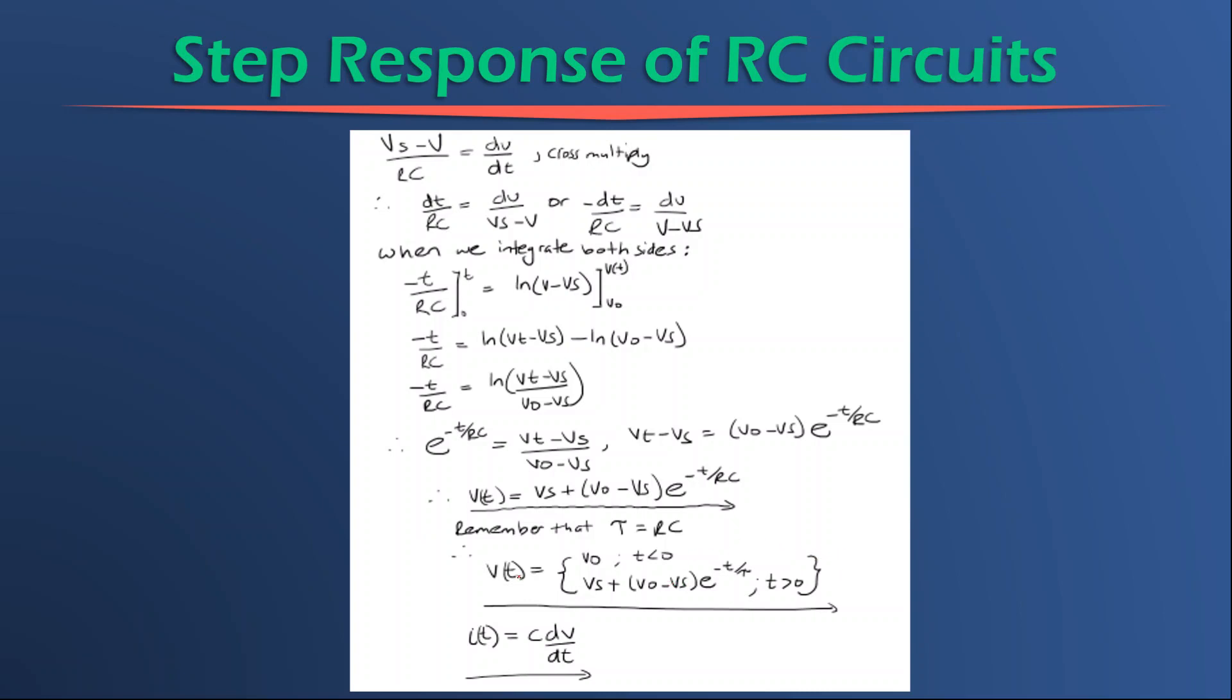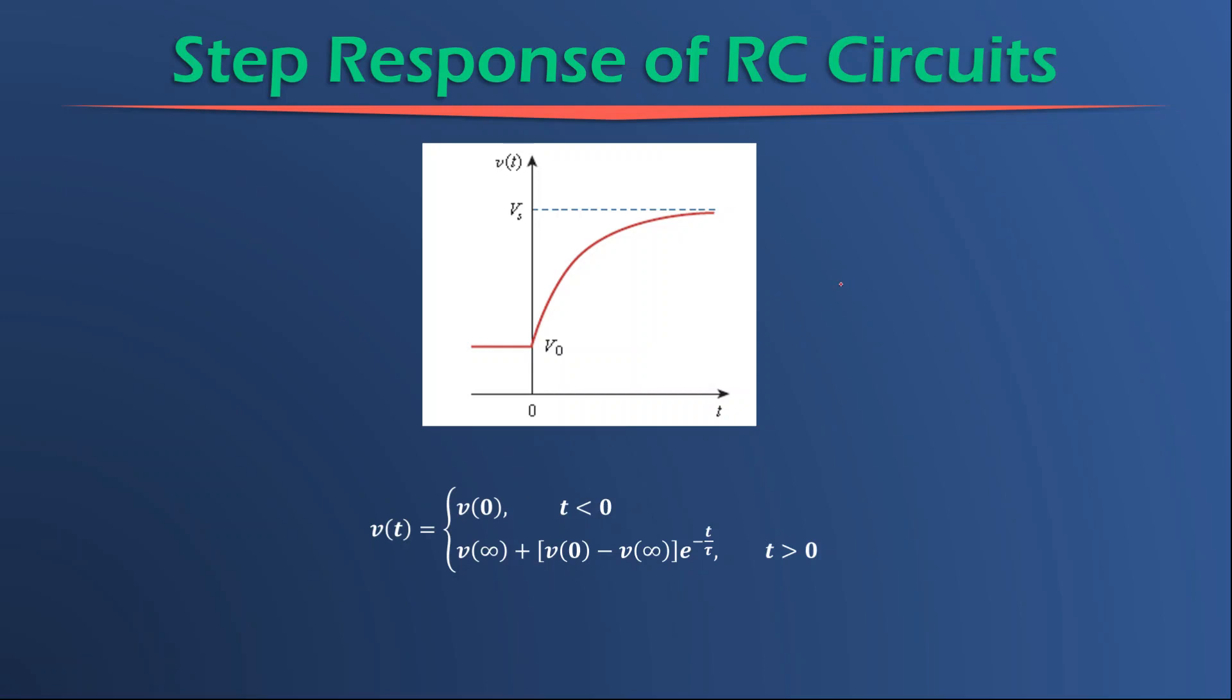That will be as follows: V(t) equals V zero when T is smaller than zero. That will be the initial voltage. And then when T is greater than zero, V(t) will equal Vs plus (V zero minus Vs)e^(-T/tau), where Vs is your steady state voltage, meaning the voltage at time T equals infinity. V zero, we know is the initial voltage. And the minus Vs e^(-T/tau), tau is still expressed as the time constant we know. So tau equals RC.